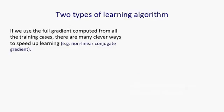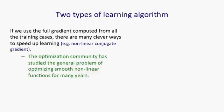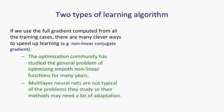So basically, there's two types of learning algorithms for neural nets. There's full gradient algorithms where you compute the gradient from all of the training cases, and once you've done that, there's a lot of clever ways to speed up learning. There's things like non-linear versions of a method called conjugate gradient. The optimization community has been studying the general problem of how you optimize smooth non-linear functions for many years. Now, multilayer neural networks are pretty untypical of the kinds of problems they study, so applying the methods they developed may need a lot of modification to make them work for these multilayer neural networks.